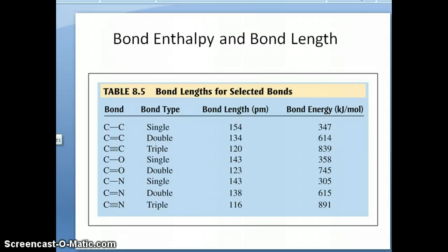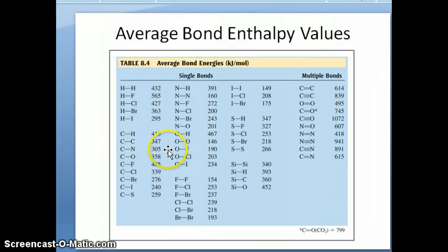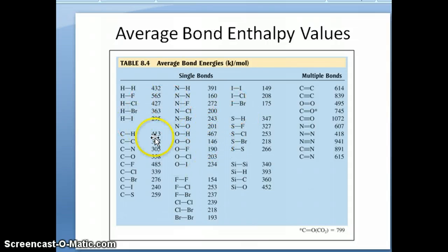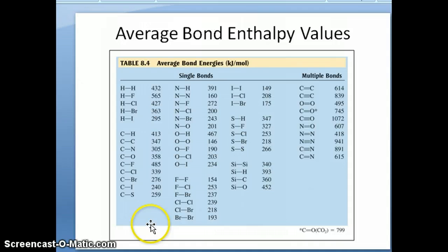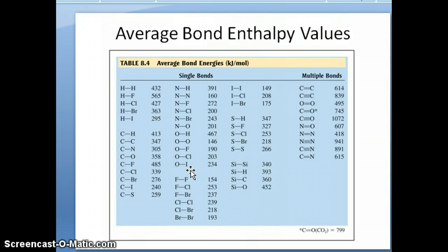Now, what is the use of bond enthalpy? But first, let's highlight one thing: comparing these values to the lattice energy, which is the strength of ionic bonds, the bond enthalpy values are lower. Lattice energy values tend to be above 1,000 kJ/mol on average, whereas most bond enthalpy values are much lower than 1,000 kJ/mol — except for some triple bonds. So ionic bonds are stronger than covalent bonds. In an ionic bond, there's a full electrostatic interaction between a positive and negative ion, whereas in a covalent bond, electrons are shared, so it's not as strong.